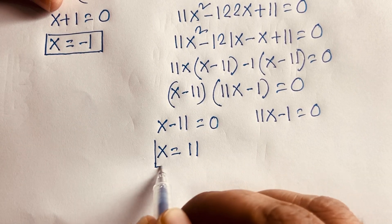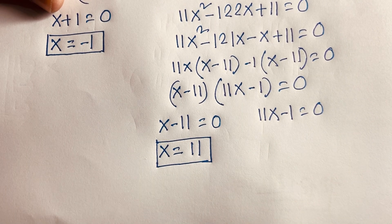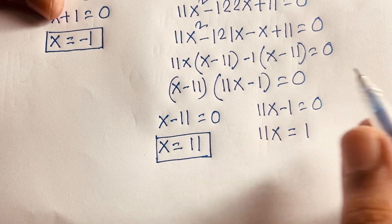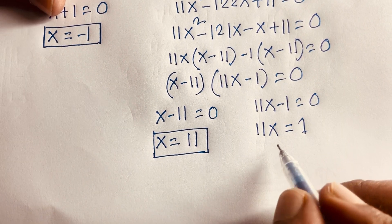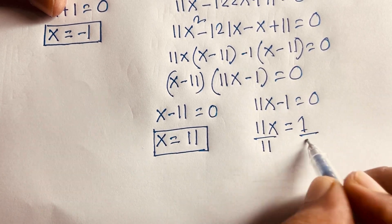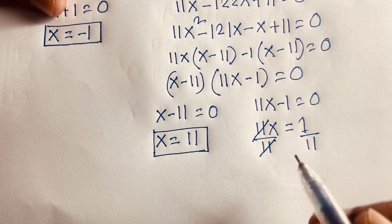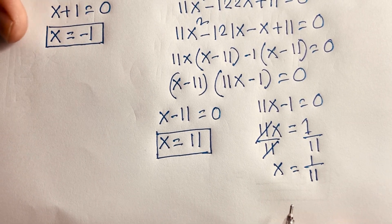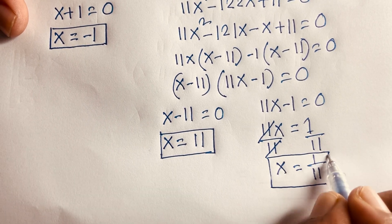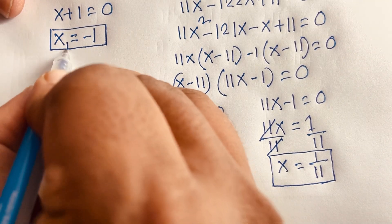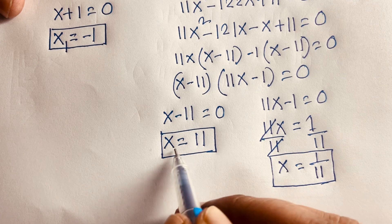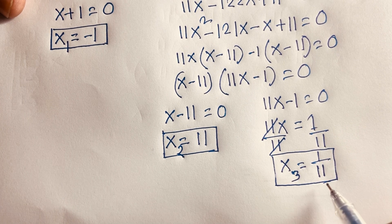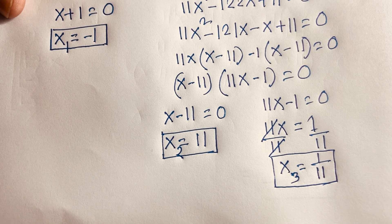From x minus 11 equals 0, we get x equals 11. From 11x minus 1 equals 0, we get 11x equals 1, and dividing both sides by 11 gives x equals 1 over 11. So our final answers are: x₁ equals minus 1, x₂ equals 11, and x₃ equals 1 over 11. This is our final answer for this German Math Olympiad equation.